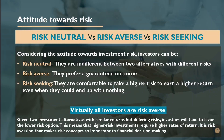Risk is going to be approached differently by different investors and managers, so we need to understand attitudes toward risk. Investors have three main attitudes: they can be risk neutral, risk averse, or risk seeking. Risk neutral means they are indifferent between two alternatives with different risks. Risk averse means they prefer a guaranteed outcome. Risk seeking means they are comfortable taking a higher level of risk in order to earn a higher return.